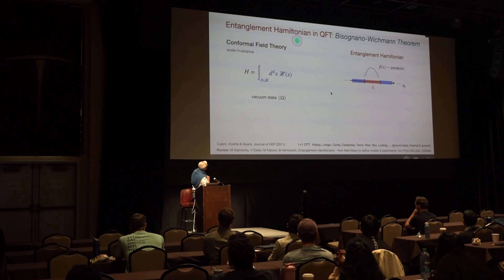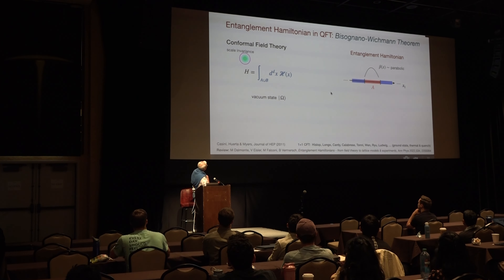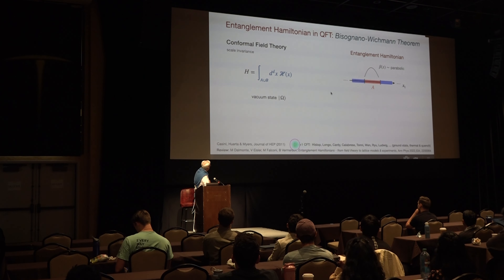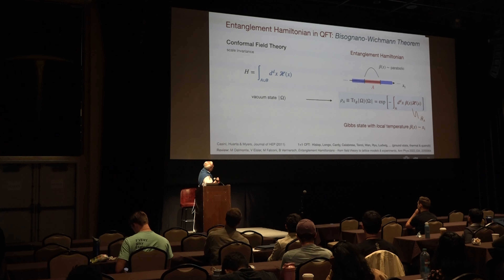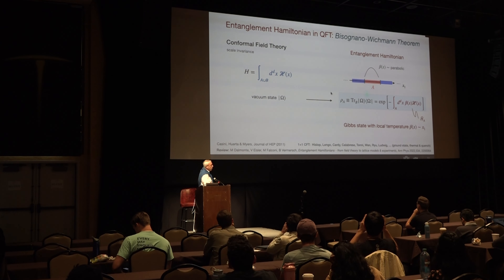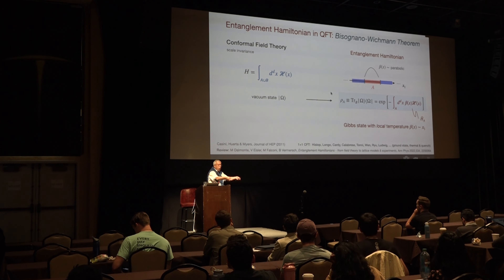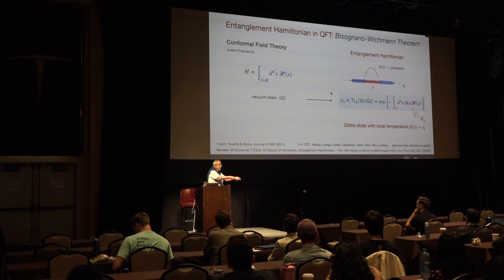If you go now to conformal field theory — the relation with the Heisenberg model — if of course the system has scale invariance, this allows us, following Casini, to take part of the system and you get the same result, but now this inverse temperature has the form of a parabola. So beta is zero at the two edges — very hot there — and if you move away it gets less hot, reaching a maximum in the middle, then again at the other side very hot.